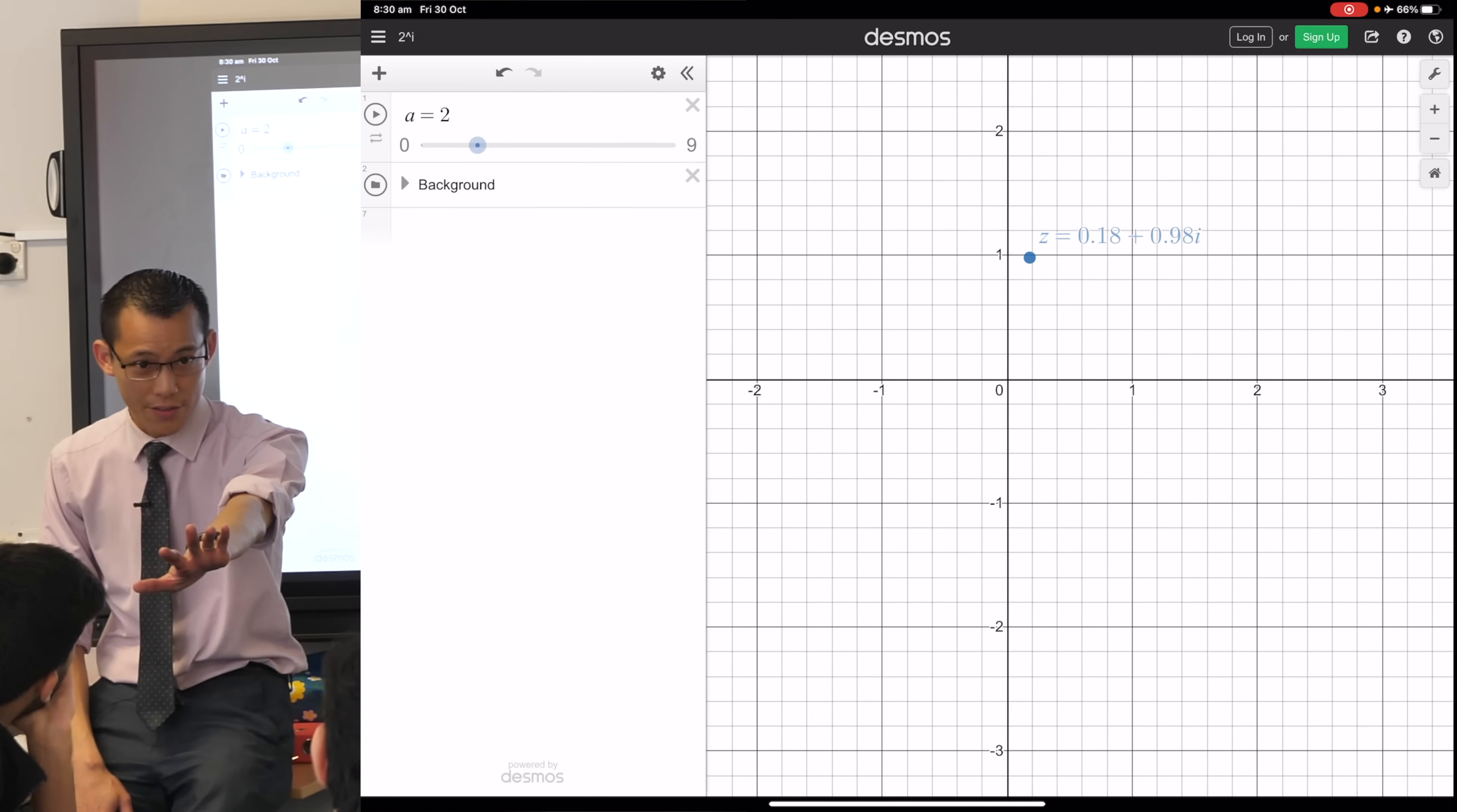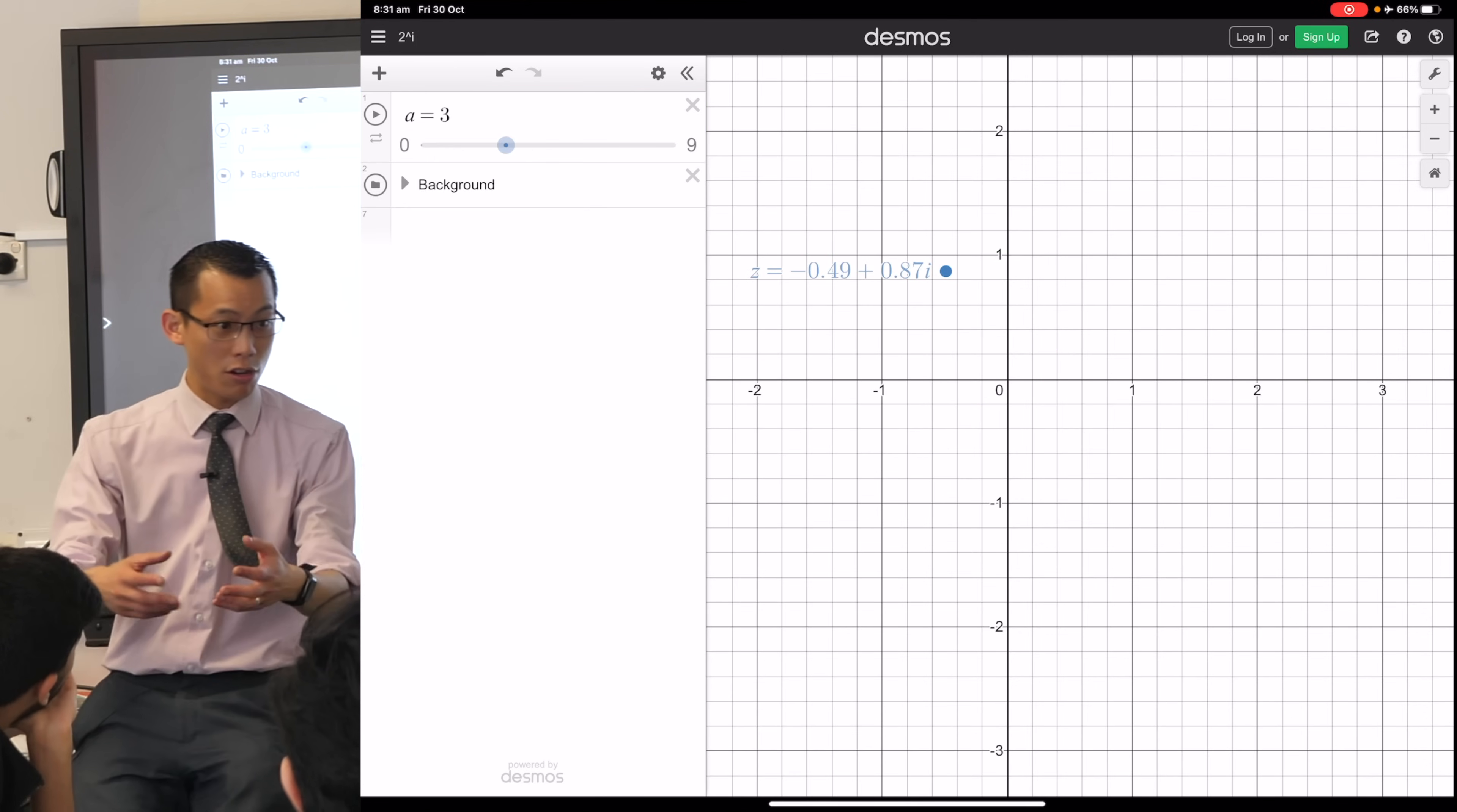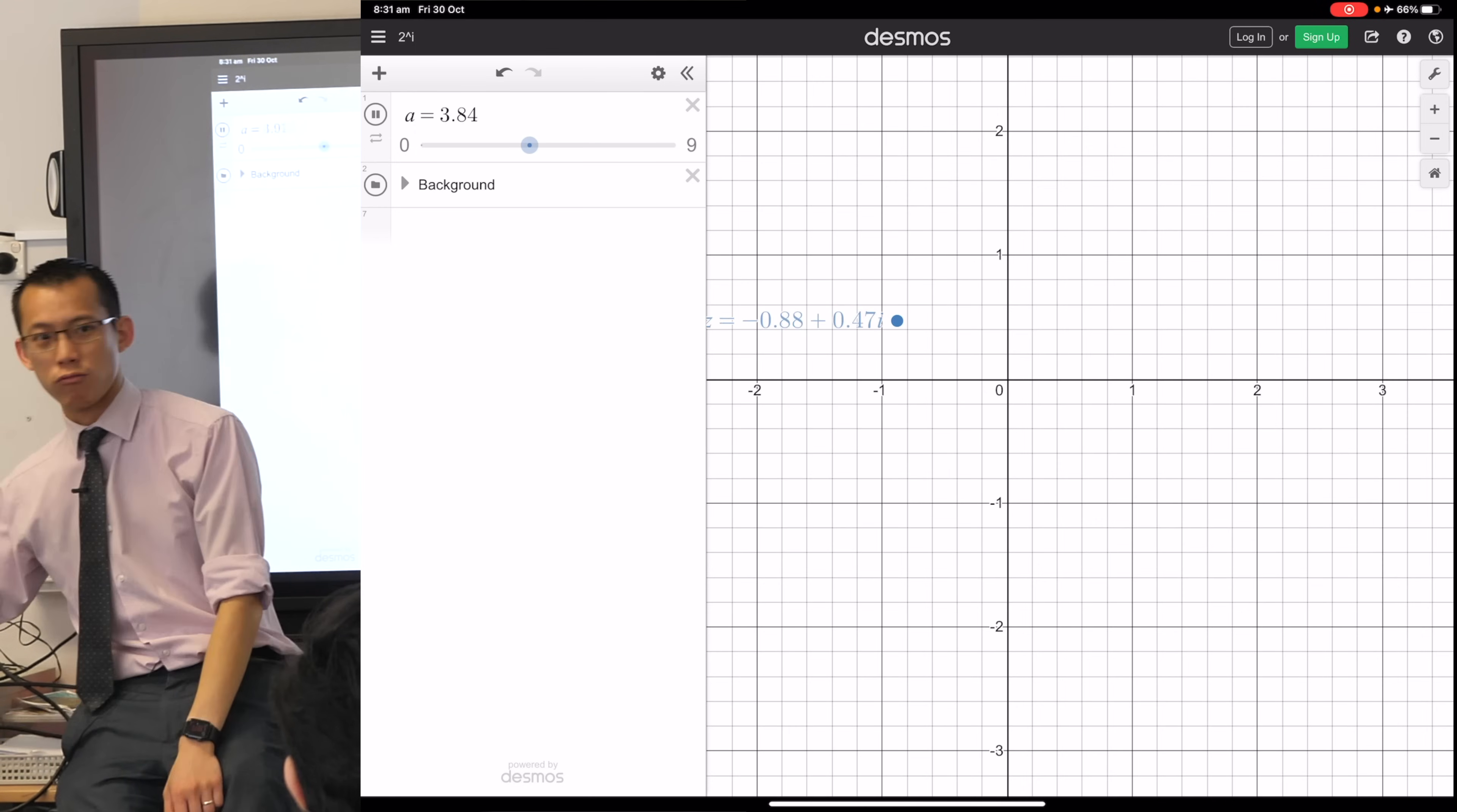You had 0.77 plus 0.64I. So it was around here. And then, for the next one, I'm here. Where might the next one go? Let me just do one more, and then I'm going to animate it. Let's do, sorry about that weird stuff. There's 3. So this is 2 to the power of 3I now. So I was over here, and then I was here. What's happening? How would you describe the geometry of this?